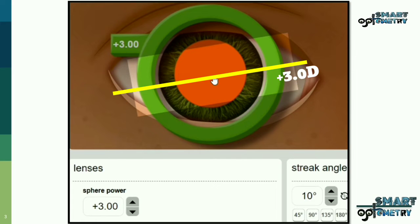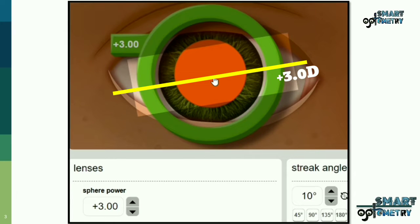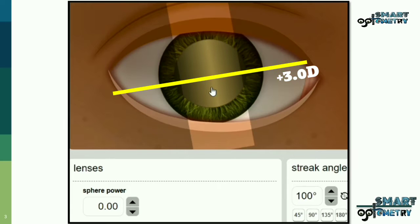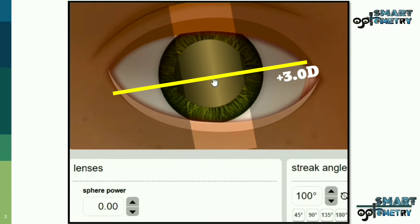Now we will move to the other meridian and neutralize it with another spherical trial lens. As our one meridian is 10 degrees, the other meridian will be 100 degrees. In this meridian also, the movement is with, so we will neutralize it with a trial lens having against movement, or a plus lens.